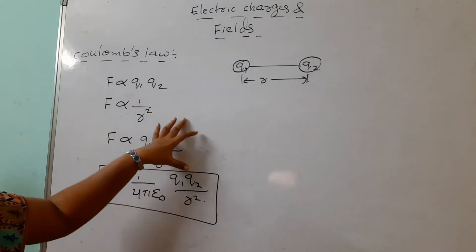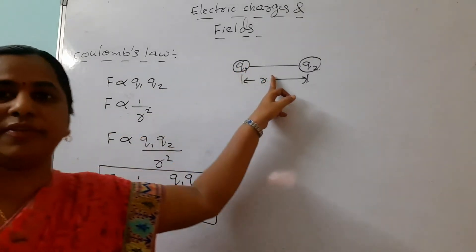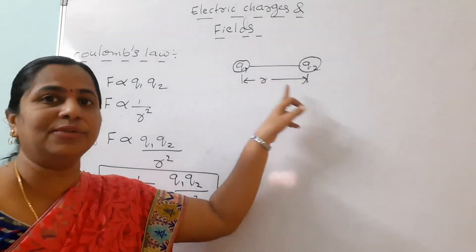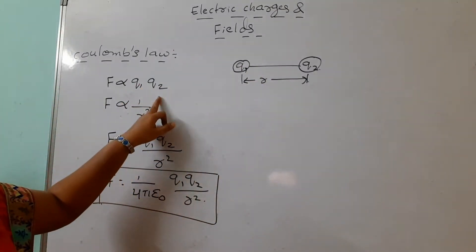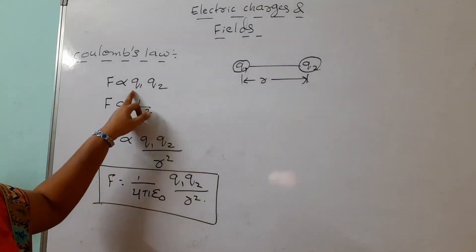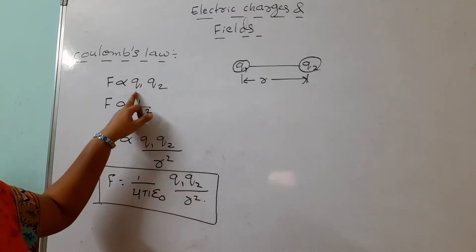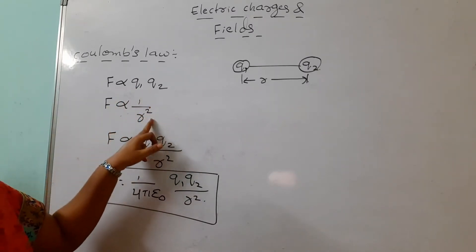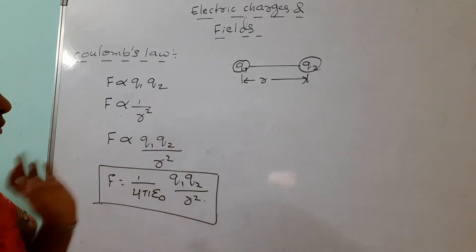The statement of Coulomb's law: the force of attraction or repulsion between two charges is directly proportional to the product of the magnitudes of the two charges and inversely proportional to the square of the distance between them.